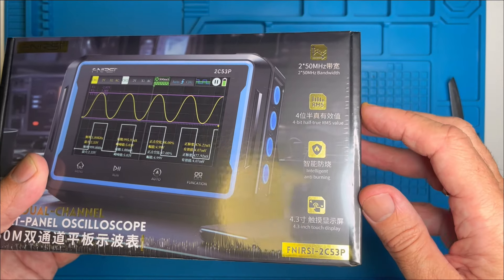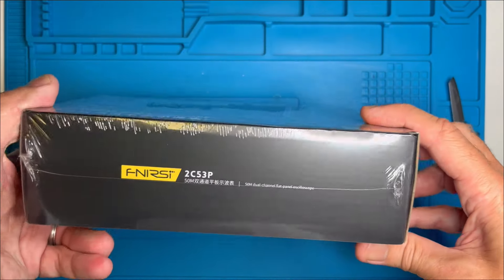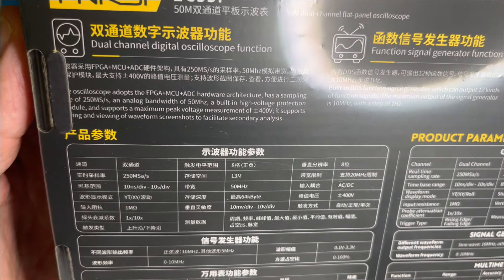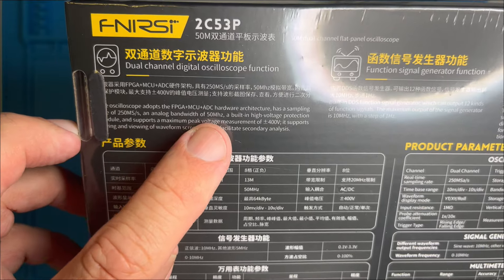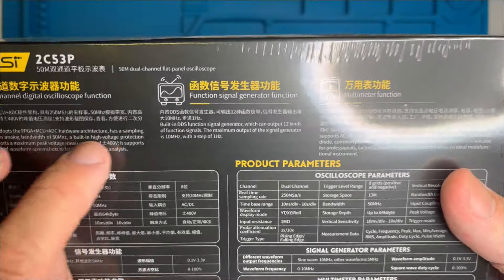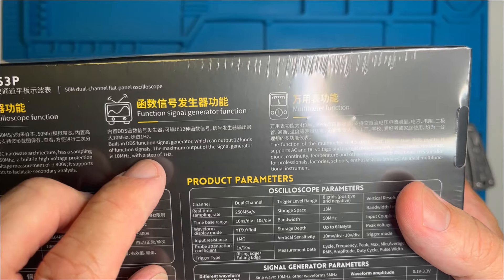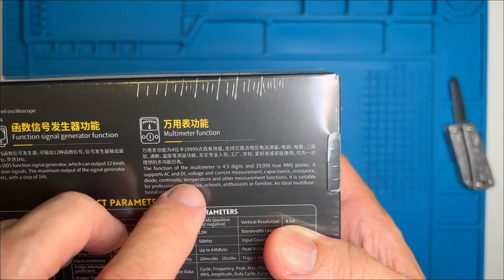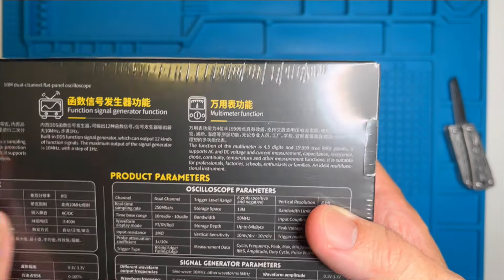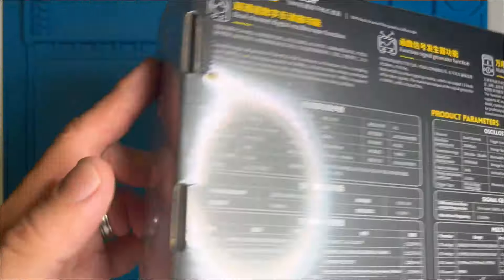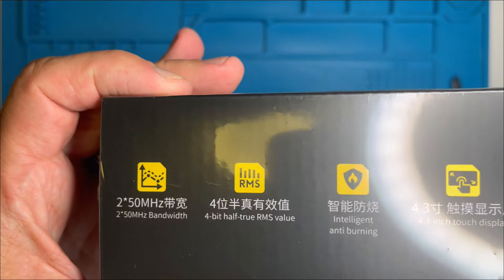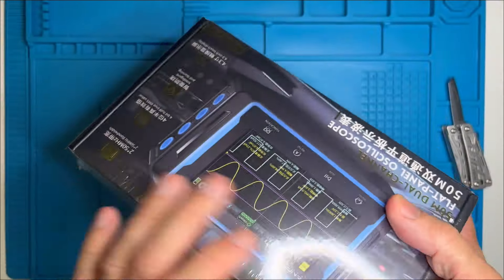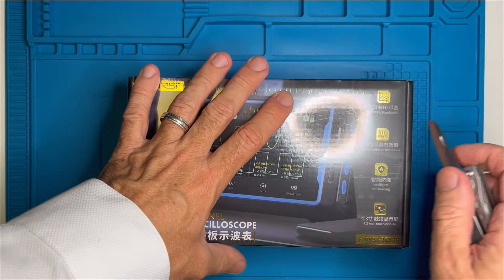You've got true RMS as shown on the box. It's FPGA plus MCU plus A to D. Signal generator 10 megahertz, 4.5 digits 20,000 count RMS multimeter. 2 times 50 megahertz channels.